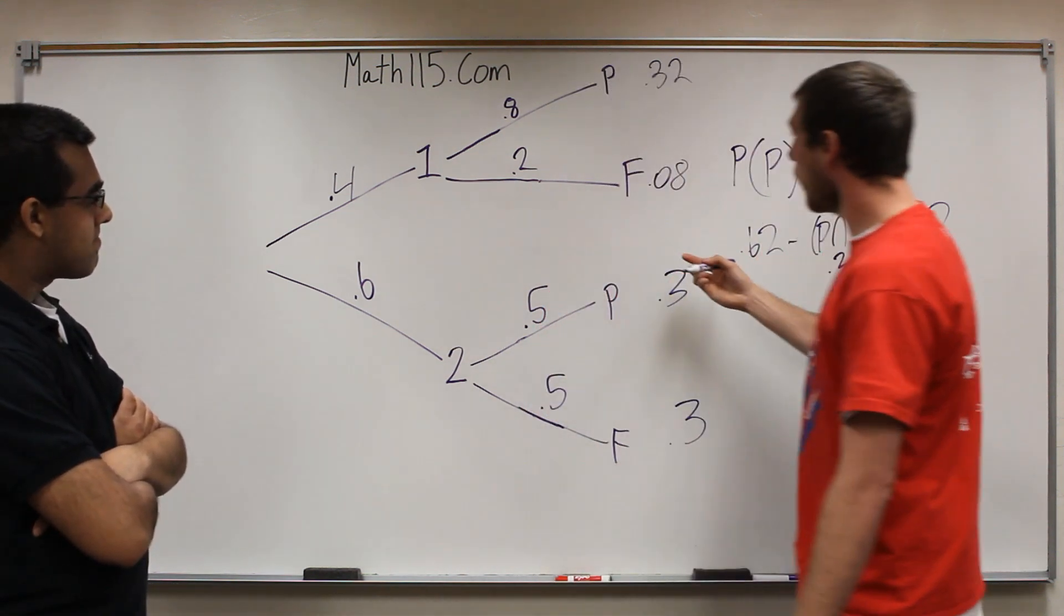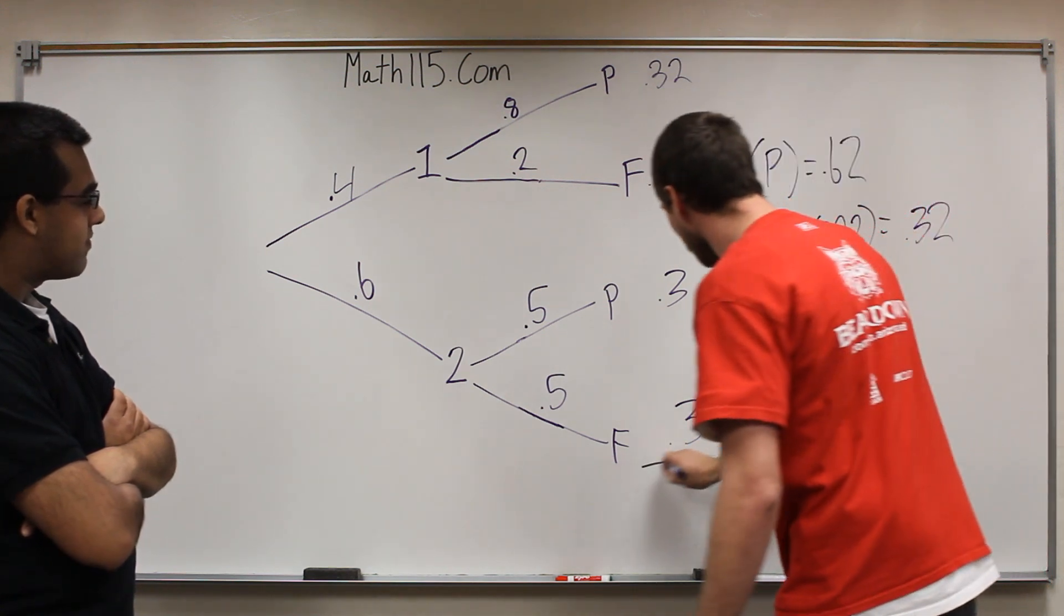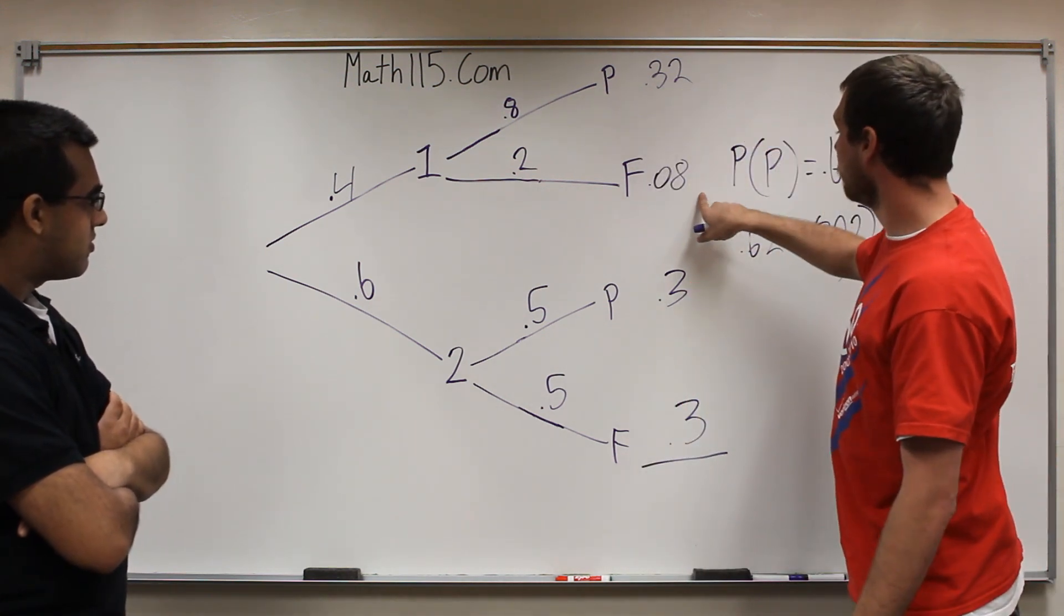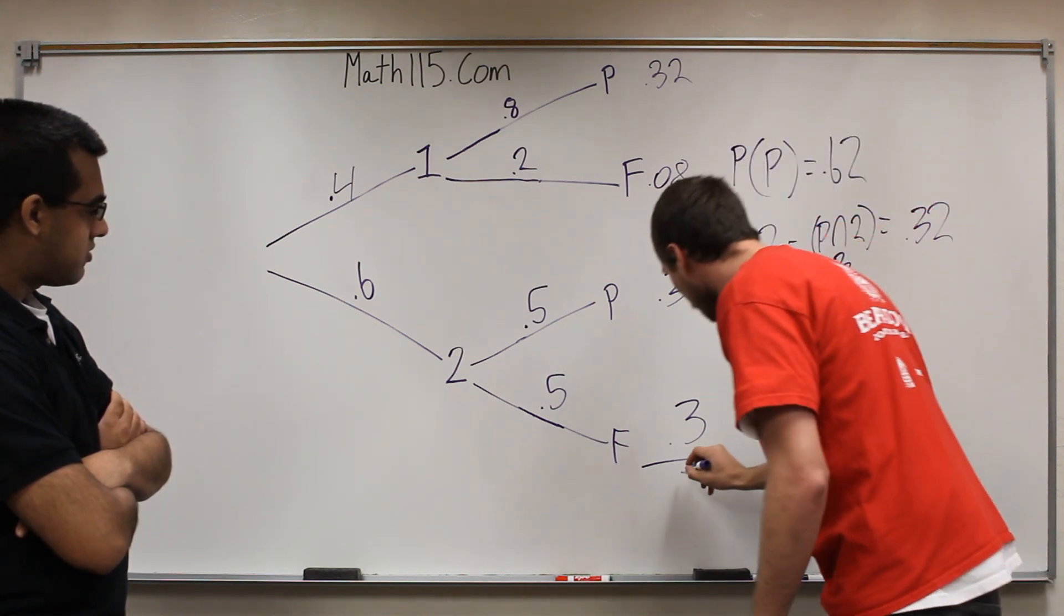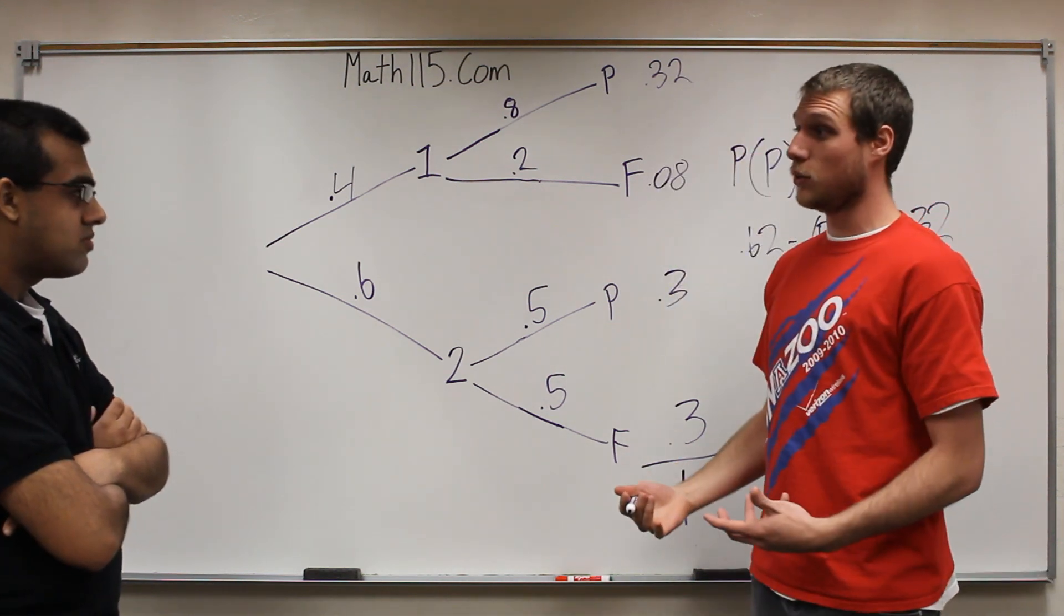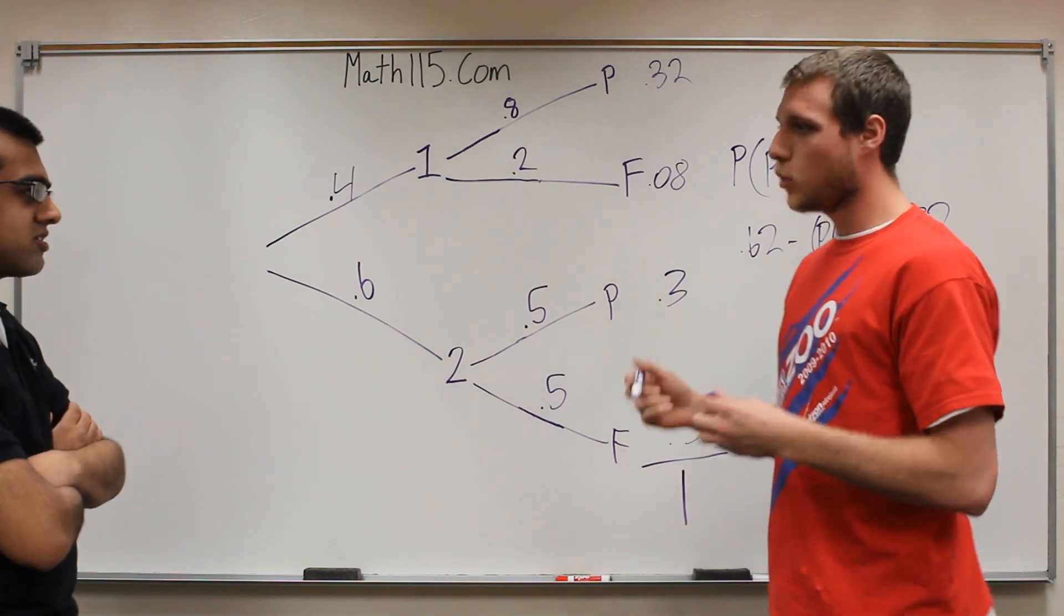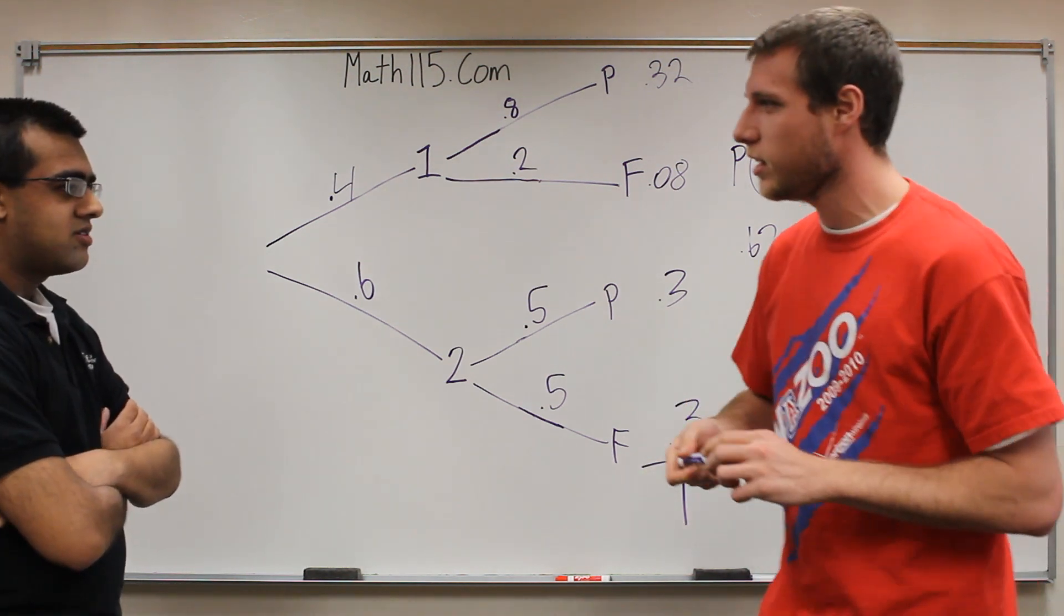And then as a check, we can add all these up and make sure they equal 1. So 32 plus 8 is 40, 70, 1. Perfect. We did the math right. Everything equals up to 1. So now there are a couple of questions we have to answer for this one.